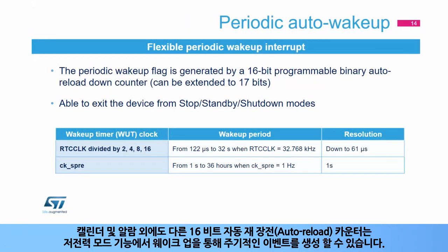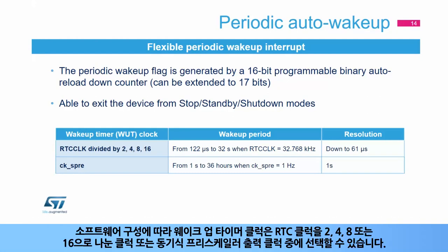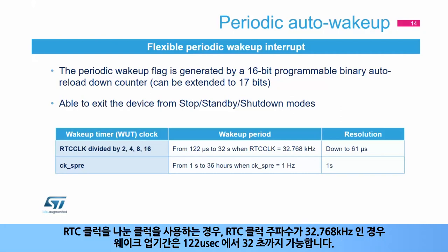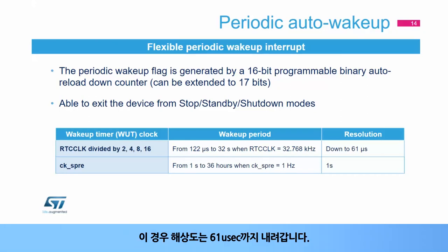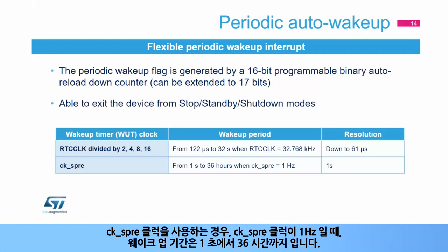In addition to the calendar and alarms, a 16-bit auto-reload counter can generate periodic events with wake-up from low-power modes capability. This counter cannot be read. Depending on the software configuration, the wake-up timer clock can be the RTC clock divided by 2, 4, 8, or 16, or the output of the synchronous prescaler. With the divided RTC clock, the wake-up period can be from 122 microseconds to 32 seconds when the RTC clock frequency is 32.768 kHz, with resolution down to 61 microseconds. With the CKS pre-clock at 1 Hz, the wake-up period can be from 1 second to 36 hours.